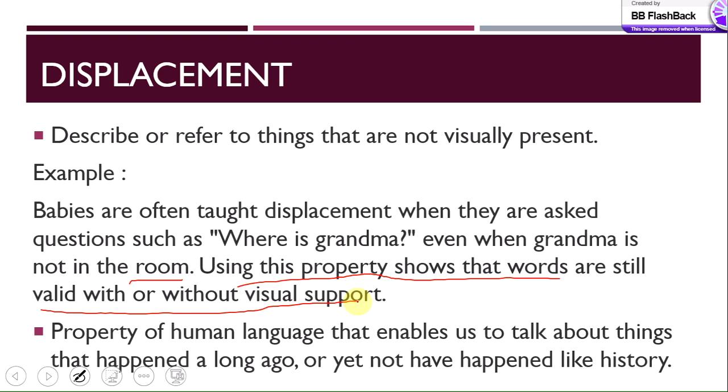In animal language you can only communicate about what is visually present, present in time and space. But in human language we can talk to a baby about grandma who is not physically present, and it is still valid. When we talk about history, language enables us to discuss things that happened earlier; when we talk about science and discoveries, language enables us to discuss what will happen in the future. This is a unique human language property.